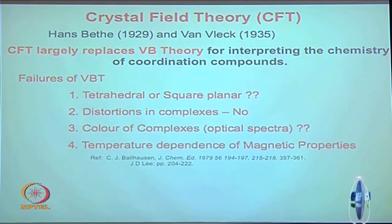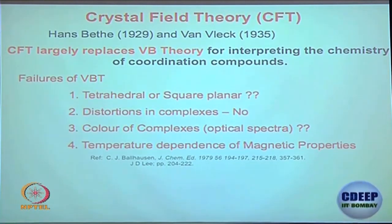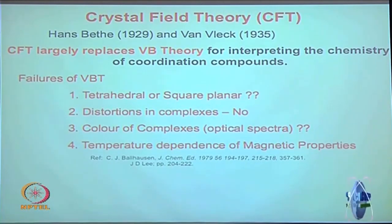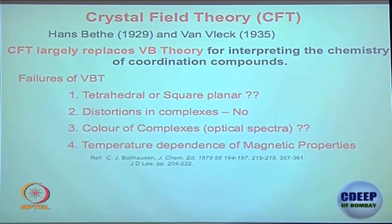One hundred years down the line it would be explained in a completely different or better way. Crystal field theory has tremendous limitations as well, but we may not be talking about those. As our understanding of chemistry progresses, we will try to address them. What we are saying is that valence bond theory really cannot explain tetrahedral and square planar geometries.